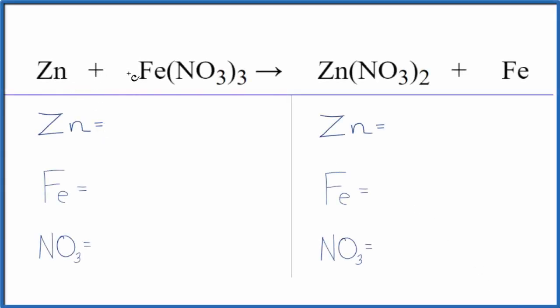To balance this equation, zinc plus iron three nitrate, we need to count the atoms up on both sides of the equation.